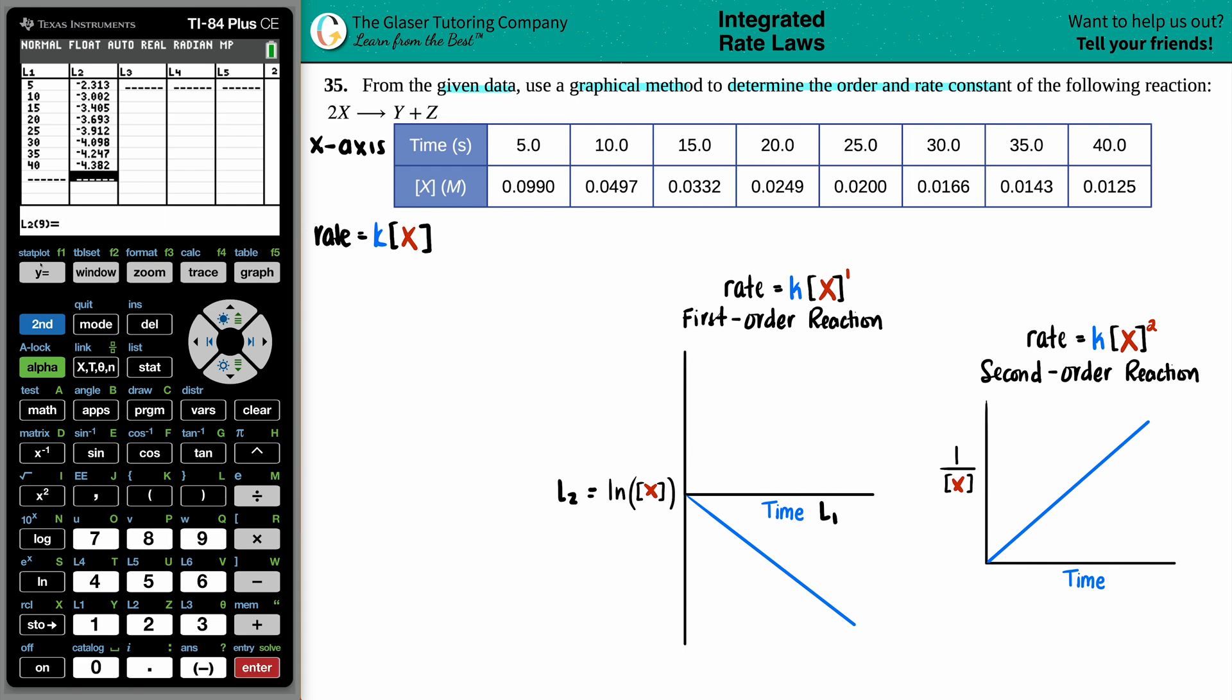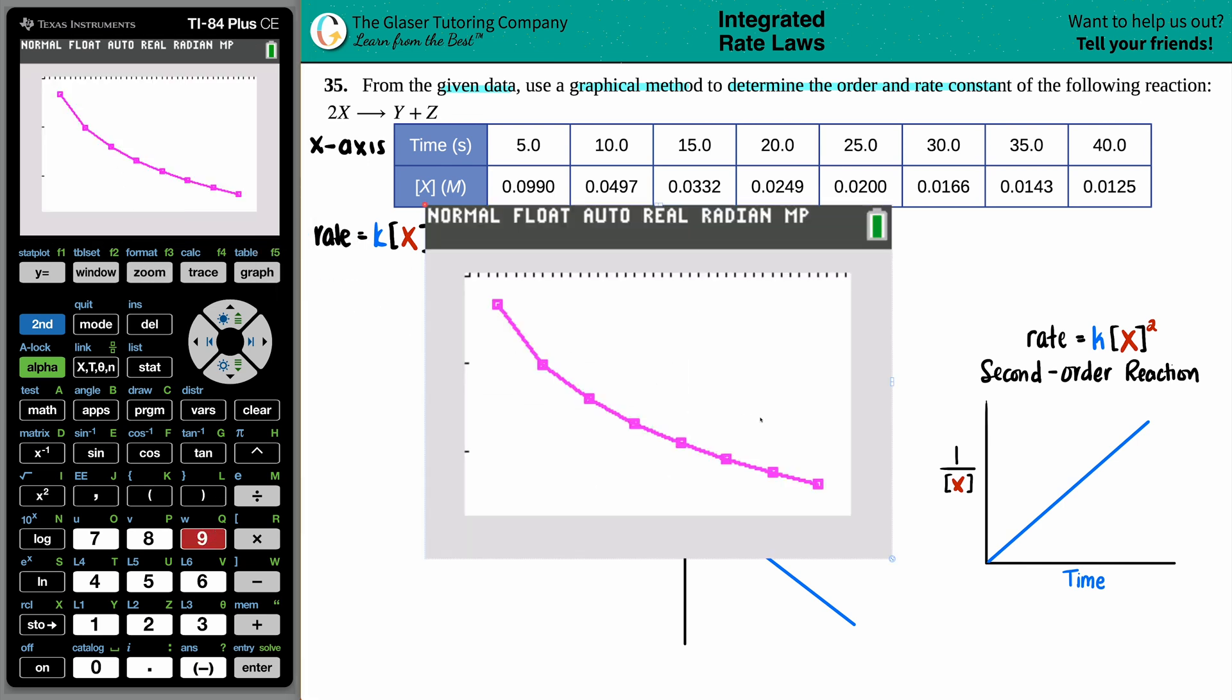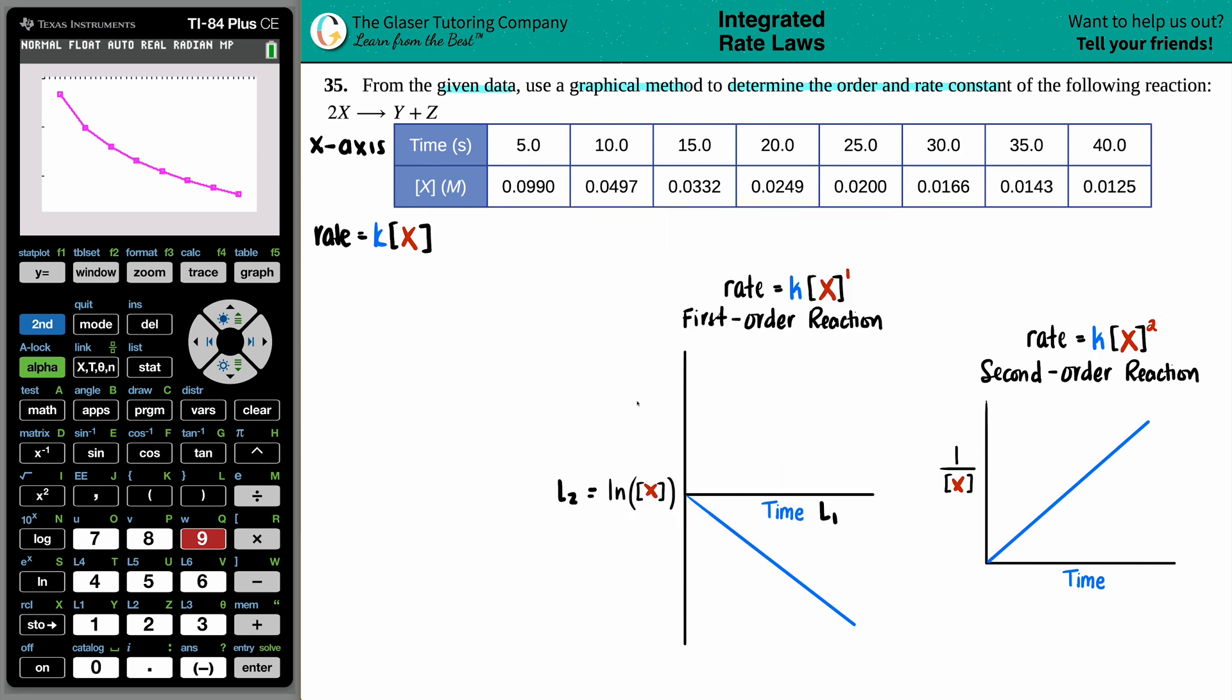Stat plot is already turned on, so all we have to do is press zoom and number nine. Oh boy. Well, once again, not a linear line, right? This is a linear line. And it's not linear all throughout. It tails out in the beginning and at the end. So we could say bye-bye to first order, which means that it should be second order.